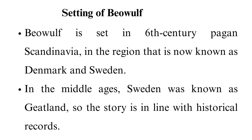Below is a plot of Beowulf summarized per lines and events. Lines 1–300: The narrator begins by mentioning Shield Sheafson, the king of the Danes who founded the monarchy in their country. He was an orphan who rose to prominence and had other clans pay him tribute. After his death, he was honored by his subjects.